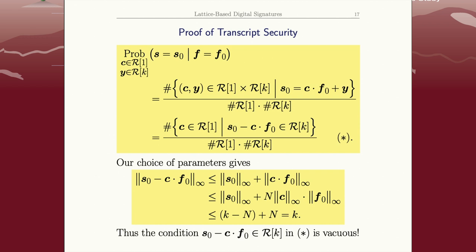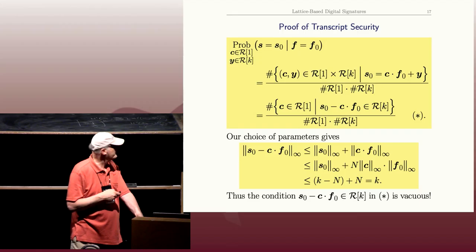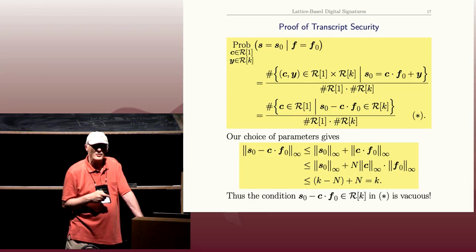Now let's think about the parameters, which are important. That's why I set things carefully initially. C has 0 plus 1 minus 1 coefficients. F naught has 0 plus 1 minus 1 coefficients.